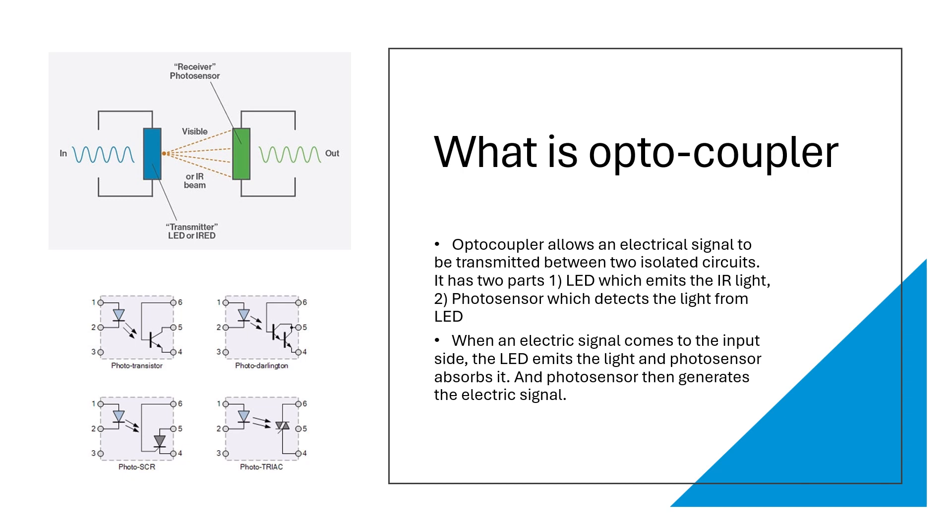Now we will see what is optocoupler and how does it work. Optocoupler is a semiconductor device which isolates two circuits electrically and then connects them optically. It has two parts: one is LED which generates IR light, infrared light.